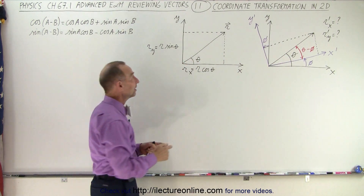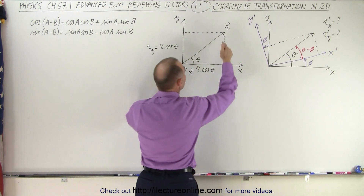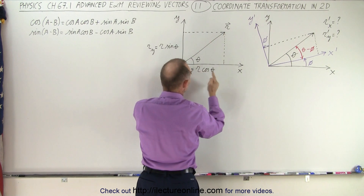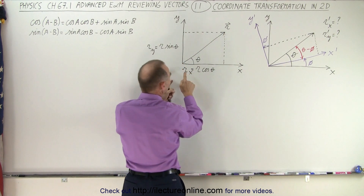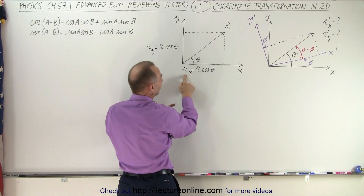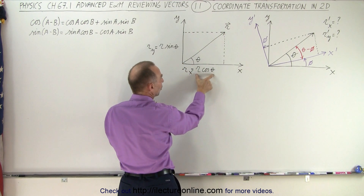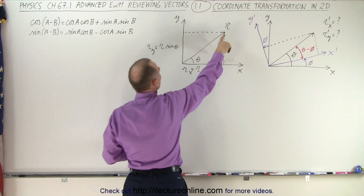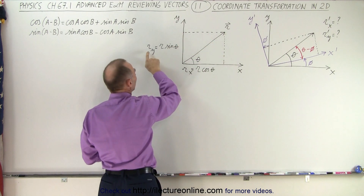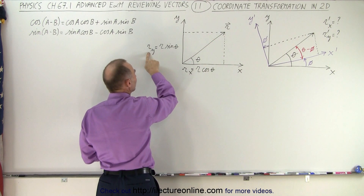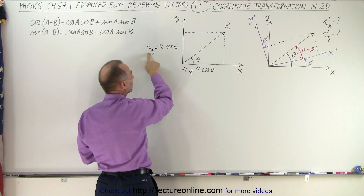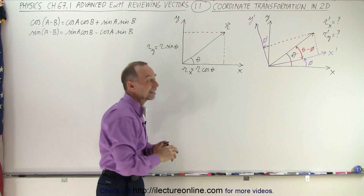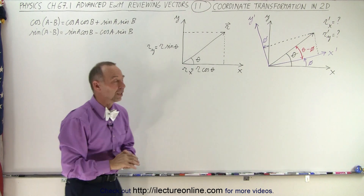If we take the R vector and project it onto the X axis, we get the magnitude of the X component, which is R cosine theta. And then if we project the vector onto the Y axis, we get the magnitude of the Y component, which is equal to R times the sine of theta.